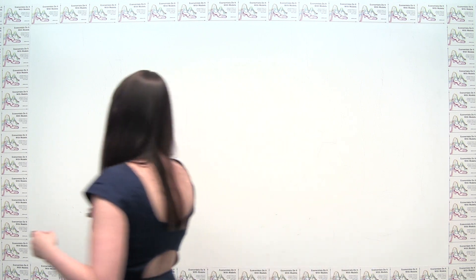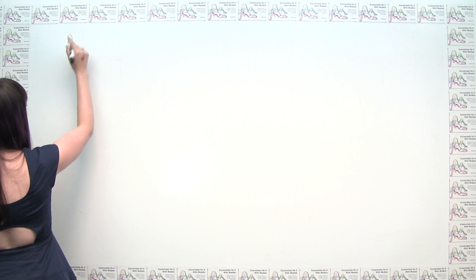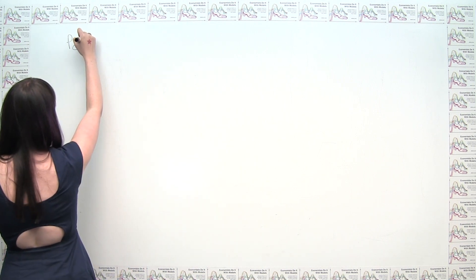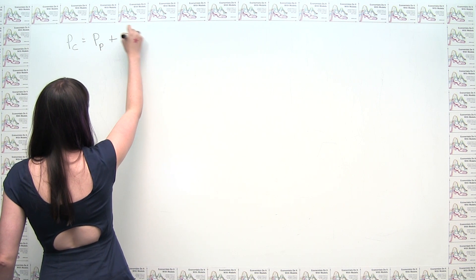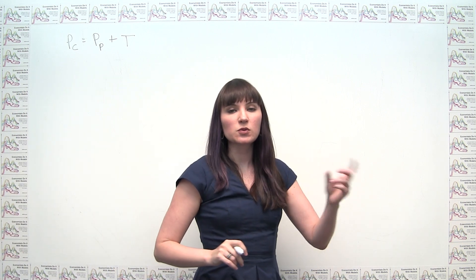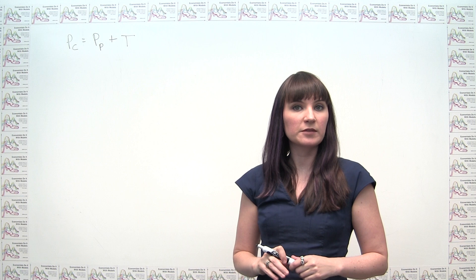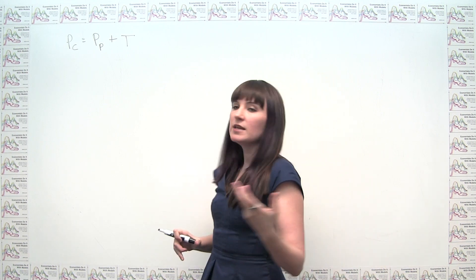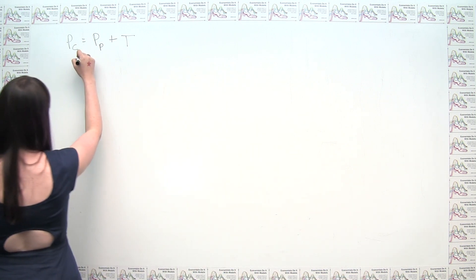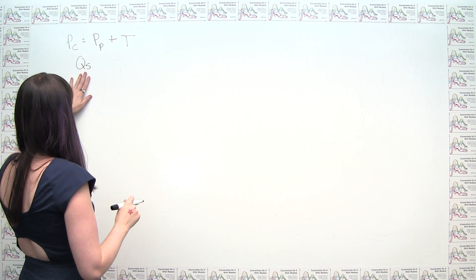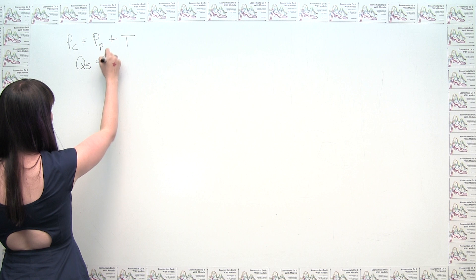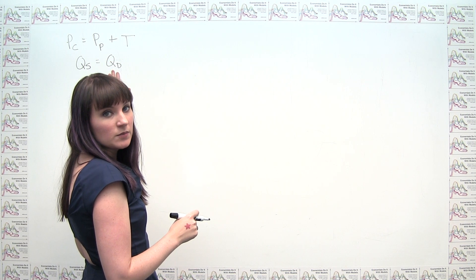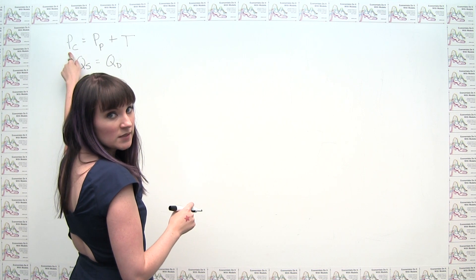Regardless of how we implement this tax, it must be the case that the price that the consumer pays, inclusive of the tax, is equal to the price that the producer gets to keep, net of the tax, plus the amount of the tax. So there has to be a wedge between the consumer's price and the producer's price, and for equilibrium, the quantity supplied must equal the quantity demanded.